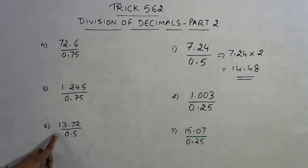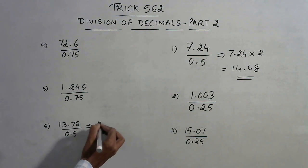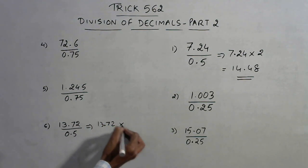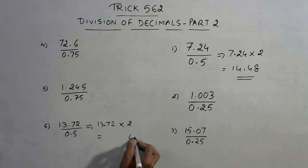Likewise you see this question here, sixth question: 13.72 upon 0.5. Now as soon as you see 0.5 in the denominator you should know that we have to double the numerator. So in this case 13.72 will be multiplied by 2 to get you the final answer and it will come out to be 2, 4, 7, 14, so 27.44.